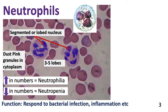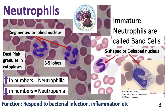Neutropenia, on the other hand, can be caused by severe widespread bacterial infections, chemotherapy, or certain aplastic anemias. Usually we might see immature neutrophils circulating in the blood, especially in the initial stages of a neutrophilia. These immature neutrophils are called band cells and are characterized by a C-shaped or S-shaped nucleus.